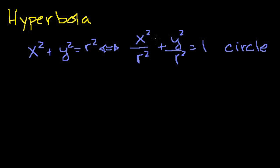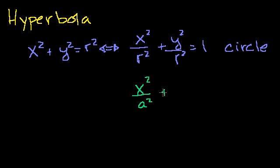Just as a review: a circle means all of the points are equidistant from the center — the major axis and minor axis are the same distance, there isn't any distinction between the two. An ellipse was pretty much the same thing, but these two numbers could be different because your distance from the center could change. So it's x squared over a squared plus y squared over b squared is equal to 1. That's an ellipse.